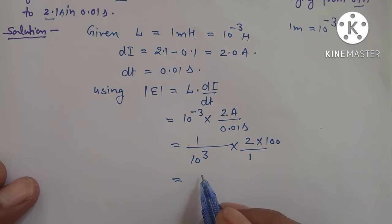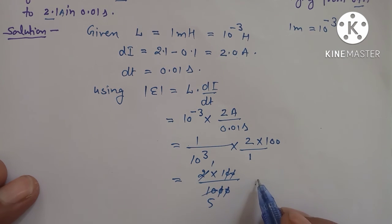So this is equal to 2 multiplied by 100 over 10 raised to power 3, which can be written as 1000. So here zeros cancel, 2 goes into 10 five times, and this equals 1 over 5.